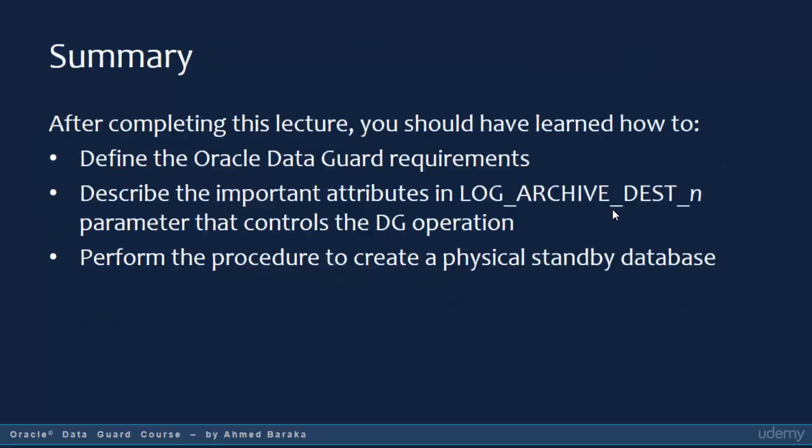By the end of this lecture you should have learned how to define Oracle Data Guard requirements, describe the important attributes in the LOG_ARCHIVE_DEST parameter that controls Data Guard operation — including SYNC/ASYNC, VALID_FOR, AFFIRM and NOAFFIRM attributes — and how to prepare the primary database and standby system to create a physical standby database. We also covered the procedure to create the standby database. In the next lecture, we will go into practice to implement everything discussed and create a physical standby database that will be used in all subsequent lectures.